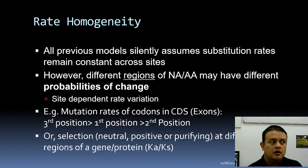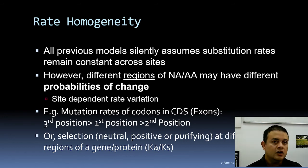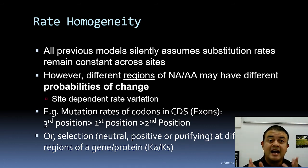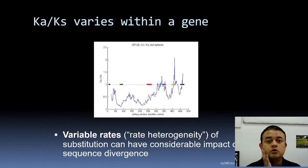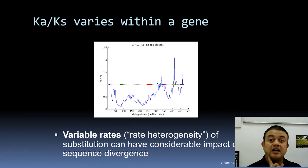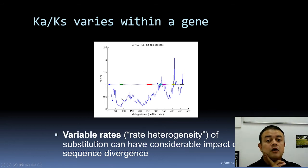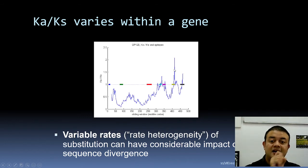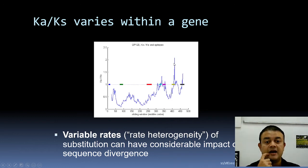Selection — neutral, positive, or purifying — at different regions of a gene or protein influences substitution rate. The Ka/Ks ratio (non-synonymous to synonymous substitutions) gives an idea about selection. A sliding window analysis of Ka/Ks across codons shows some regions below one and some above one — above one indicates positive Darwinian selection occurring at those locations.